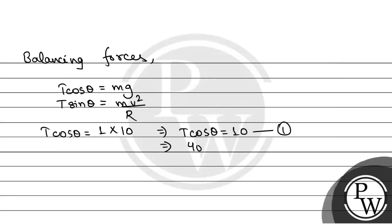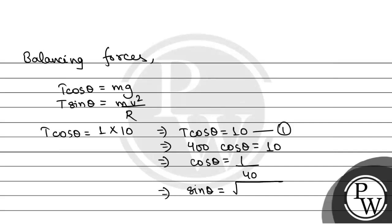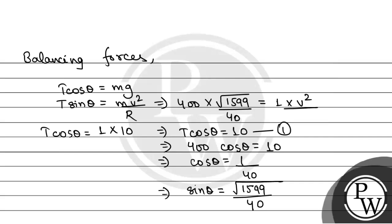Now, T cosθ = 10, so 400 cosθ = 10, giving cosθ = 1/40. Therefore sinθ = √(1 − 1/1600) = √1599/40. Putting this into the horizontal equation: 400 × (√1599/40) = 1 × V²/1, so V² = 10 × √1599.